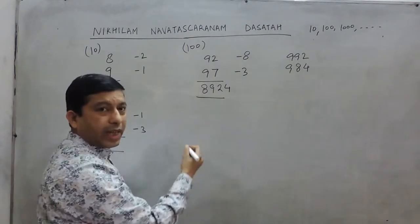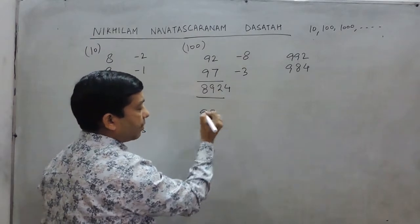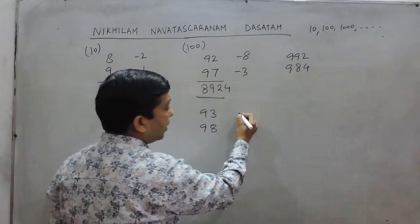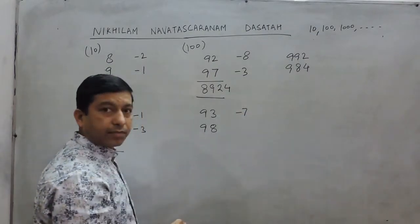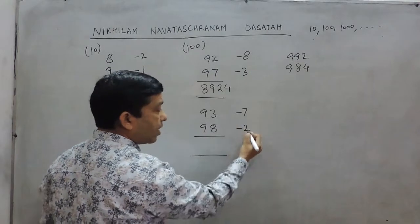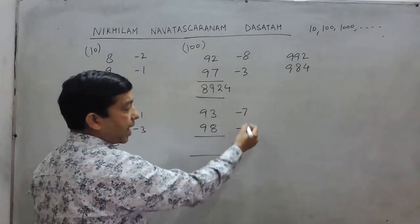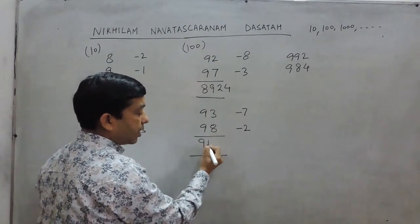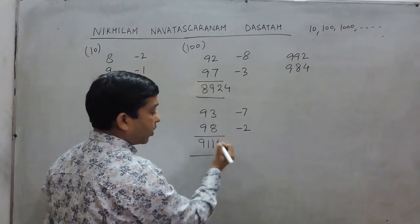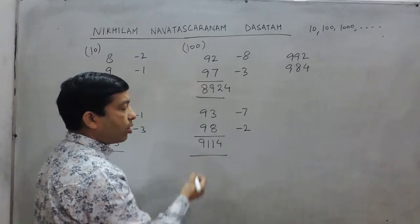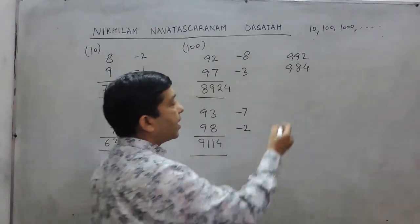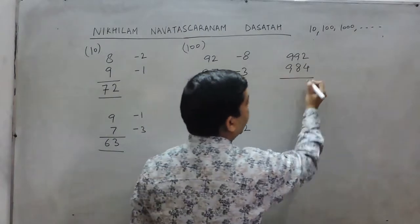We can take one more example. If we multiply 93 by 98, here the difference from 100 is 7, and here it is 2. Now 7 and 2 add up to 9. If we subtract 9 from 100, it becomes 91. And 7 multiplied by 2 becomes 14. So the answer of 93 multiplied by 98 is 9114.